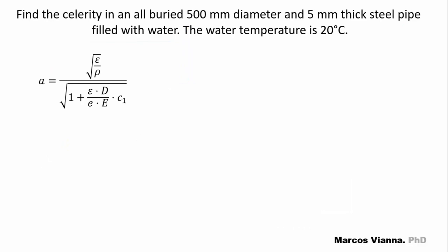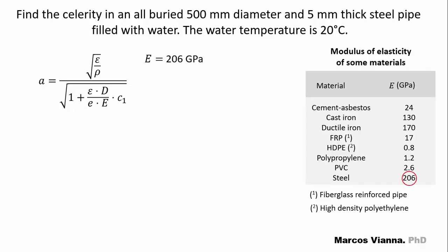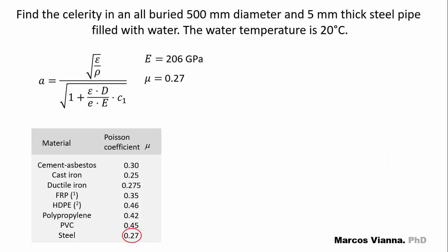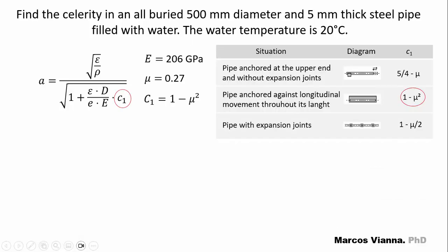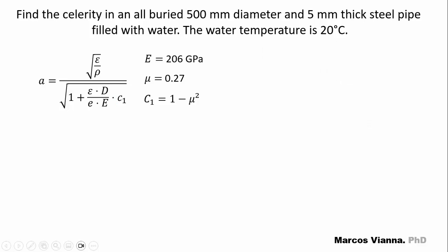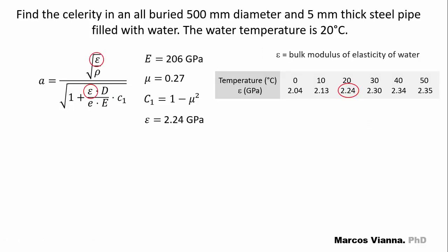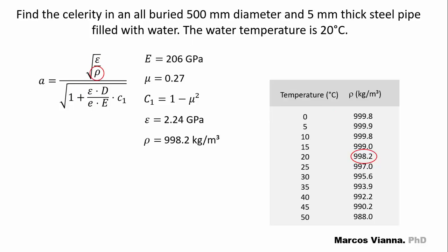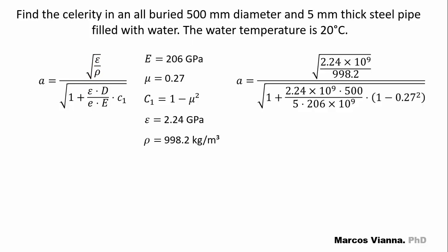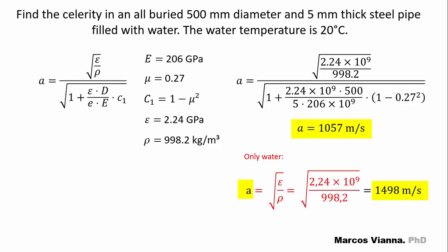Let's do an example. Find the celerity of the water inside the pipeline with these characteristics. Here is the elasticity modulus of steel and its Poisson coefficient. This one will be the C1 factor. And now the water characteristics. This is the elasticity modulus of water and this is its specific mass. We substitute the values and find this value. It's fast, but not as fast as in the water.